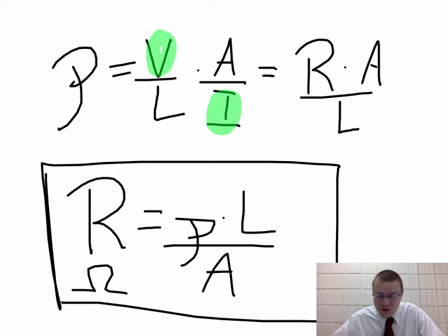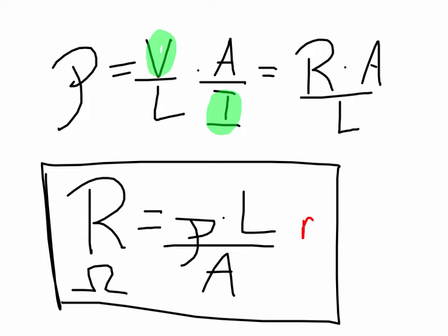And let's just check the units on that, remembering that length is meters, area is meters squared. And I need an ohm in the end. That means that resistivity must be an ohm meter. That way I can get the amount of resistance that I need from this formula.